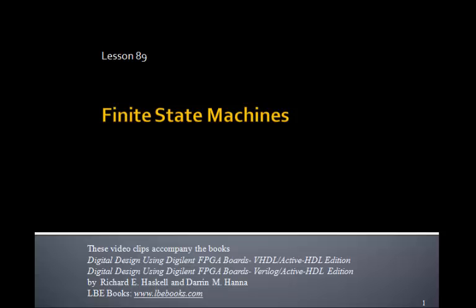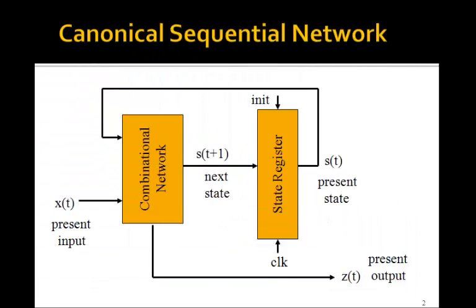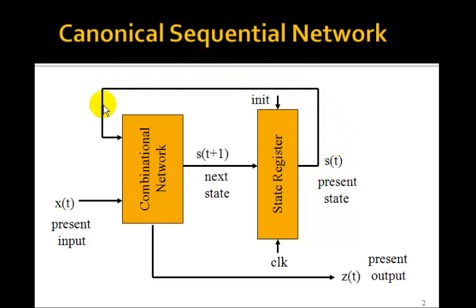This is Lesson 89 on finite state machines. Here's a block diagram for a canonical sequential network. It's made up of two blocks: a combinational network, in which the output depends only on the input, and a bunch of state registers. These are typically flip-flops, so you can think of these outputs as being the outputs of a bunch of flip-flops. This represents the present state S, and that's an input to this combinational network, together with X, which is the present input.